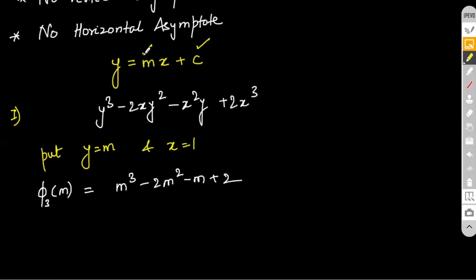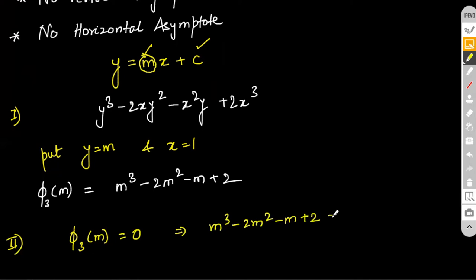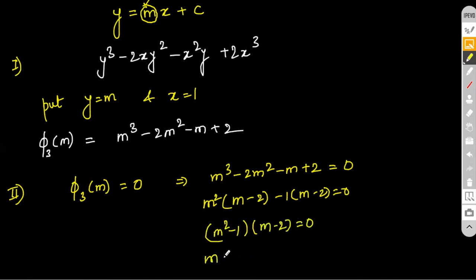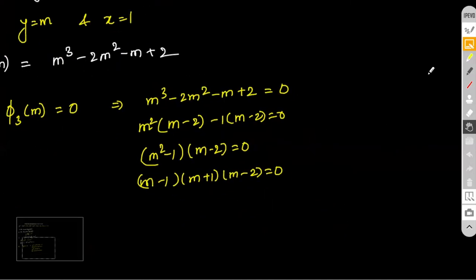In step two, we put φ₃(m) = 0 and find the values of m from there. This is very easily factorizable: m²(m − 2) − 1(m − 2) = 0, giving (m² − 1)(m − 2) = 0. This throws out three values of m: m = 1, m = −1, and m = 2.